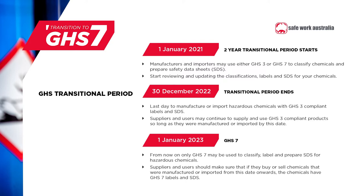If you only supply or use hazardous chemicals, you shouldn't be affected by the move to GHS7 and shouldn't need to take any action. You can continue to supply and use chemicals classified and labelled in accordance with GHS3 until your stocks run out. Keep in mind, however, that all chemicals manufactured or imported from 1 January 2023 will need to comply with GHS7, so if you're buying or selling chemicals made or imported after that date, they should be labelled in accordance with GHS7. SafeWork Australia has developed guidance material and resources to help you navigate the transition — have a look at our website for more information.